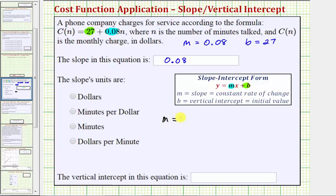This means the slope is equal to the change in the monthly charge in dollars divided by the change in the minutes talked.